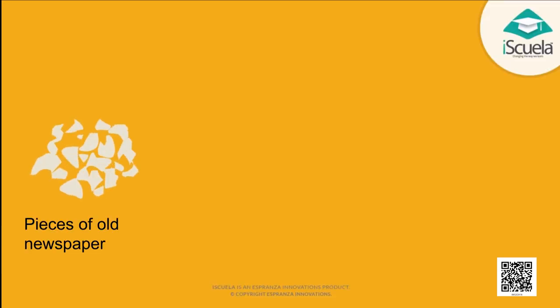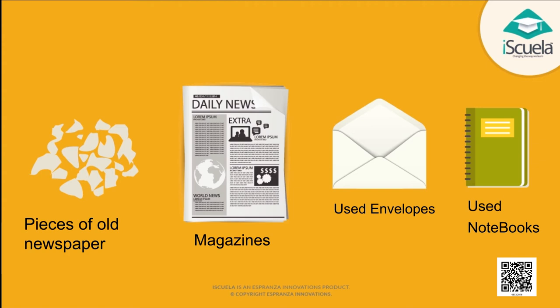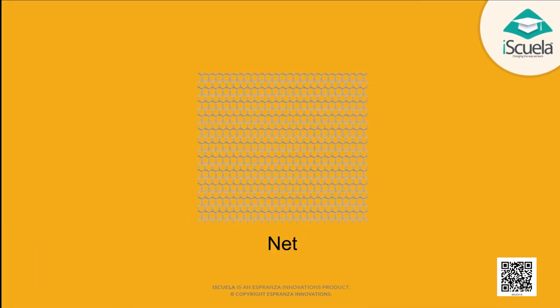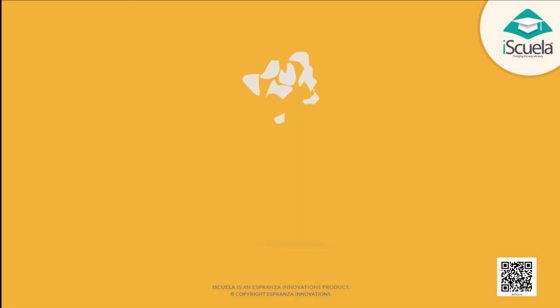For this, we will require pieces of old newspapers, magazines, used envelopes and used notebooks. We will also need a frame fitted with a wire mesh or a net. Children, you can also use a large sized sieve in place of this frame. Now, tear all the papers you have taken into pieces. Put them in a tub or a bucket and pour some water in it.